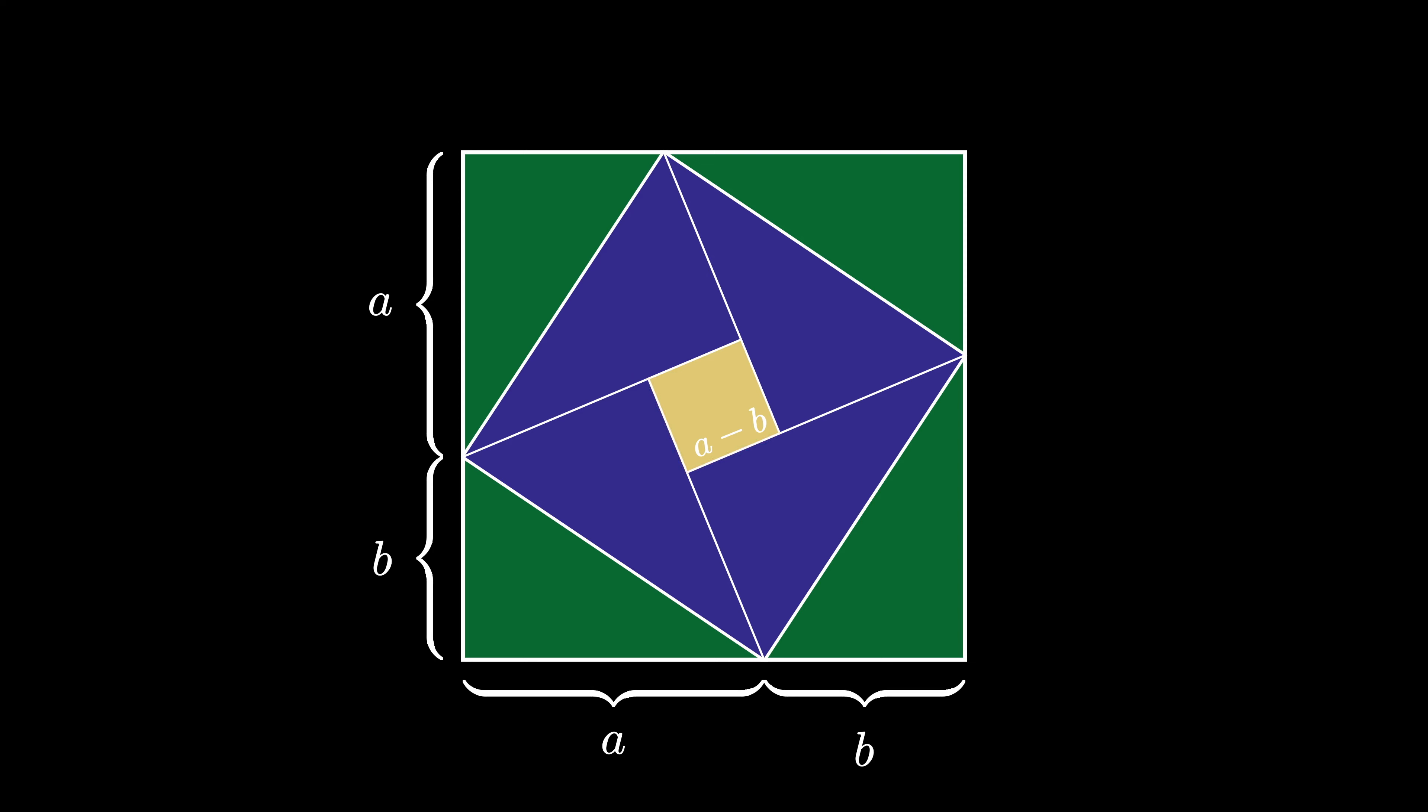Now we can find the area of this shape in two different ways. First, we note that it is an a plus b by a plus b rectangle, so the area is a plus b quantity squared.